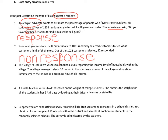Number three: the village of Oak Lawn wants to study the income level of households. The village manager selects 10 homes in the southwest corner and sends an interviewer to determine household income. Maybe the southwest corner is the nicest area with the biggest homes — that seems like a convenient sample. So that's sampling bias.